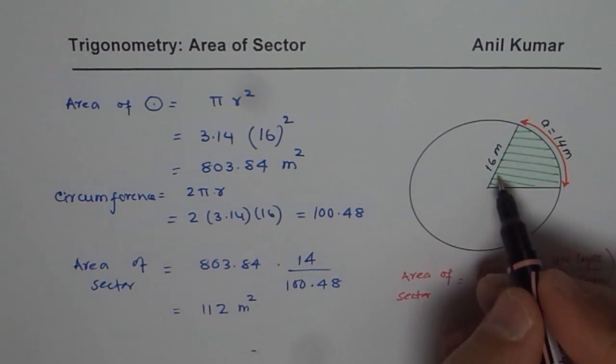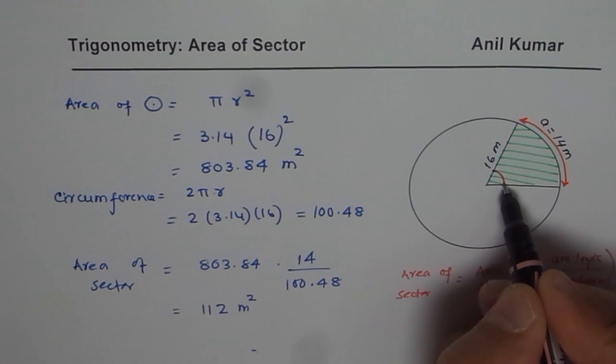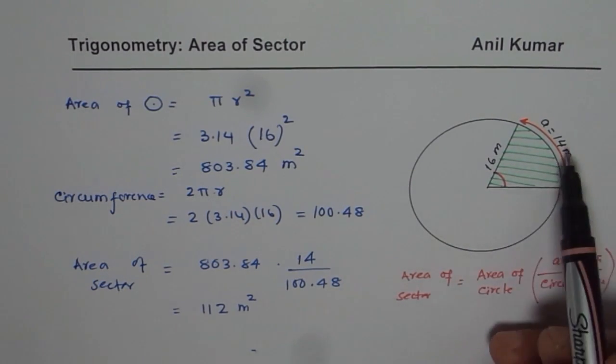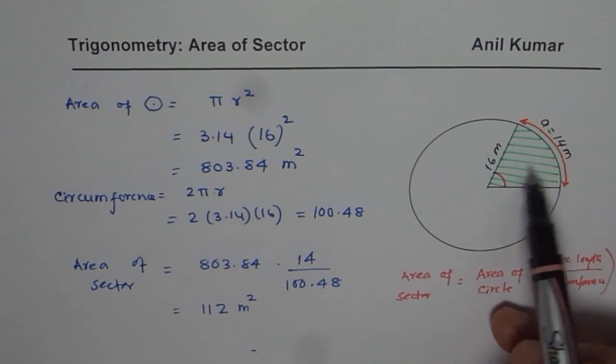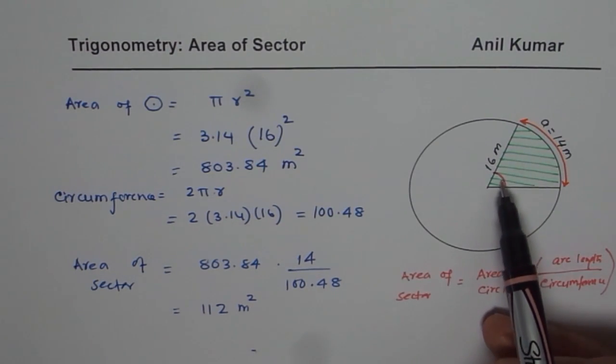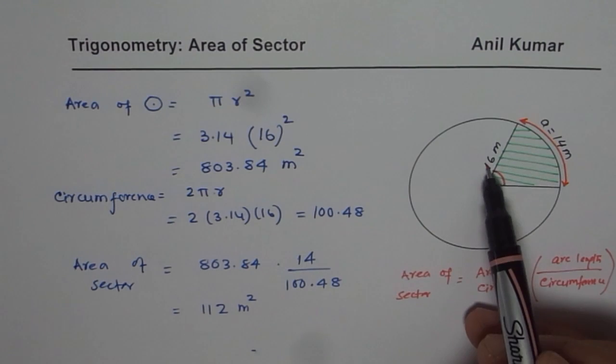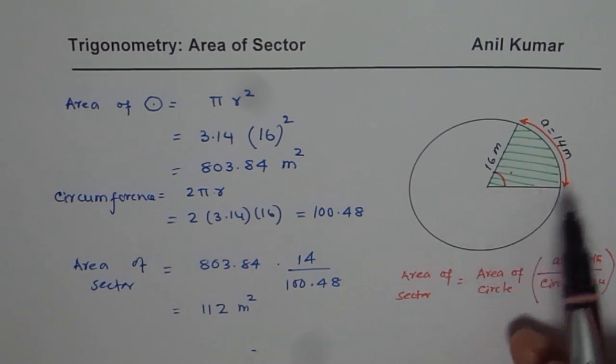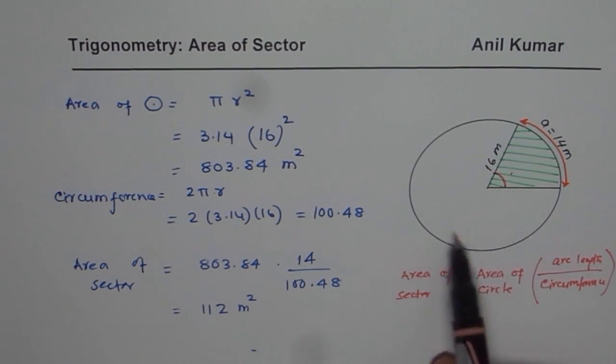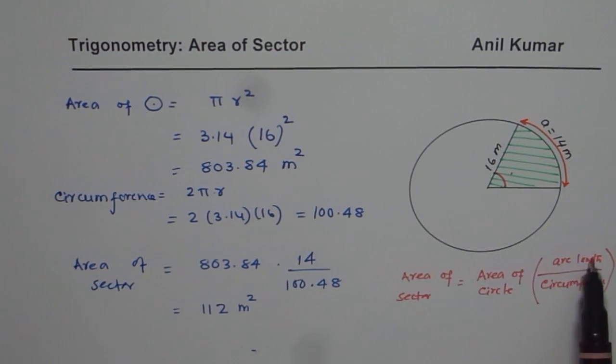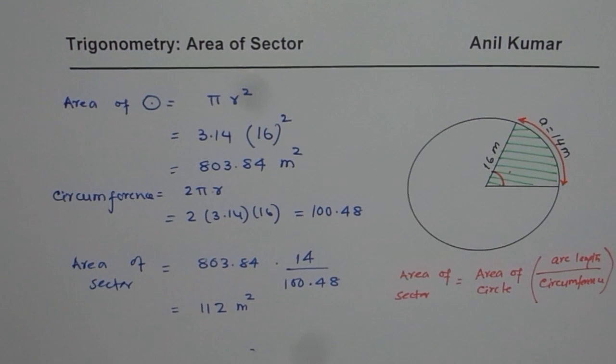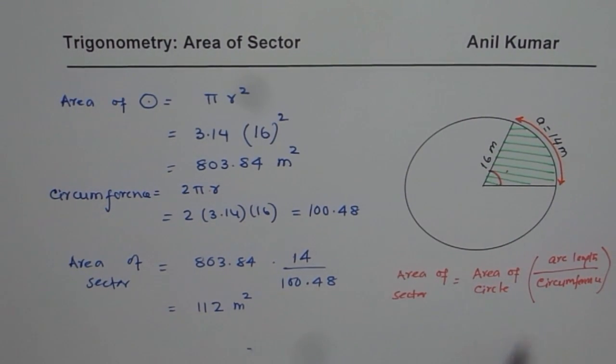So you don't really have to find the angle. You could do that - that is you can use arc length equals r theta or theta is the ratio of arc length over radius, find the angle and then use pi r squared angle over 2 pi. But you could directly also get by ratio of arc length and circumference. I hope this method helps you to do it faster. Thank you and all the best.